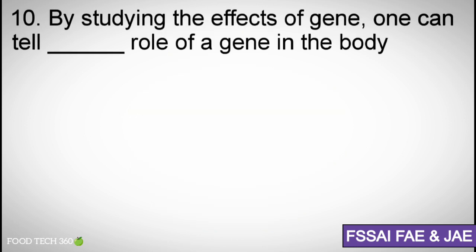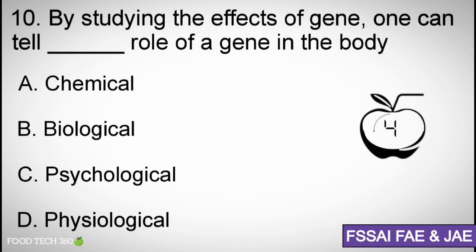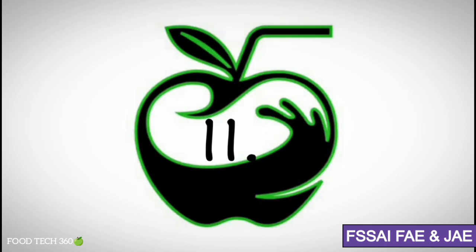Question number 10: By studying the effect of a gene, one can tell the actual role of a gene in the body. Options: A. Chemical, B. Biological, C. Psychological, D. Physiological. Correct answer: B. Biological.